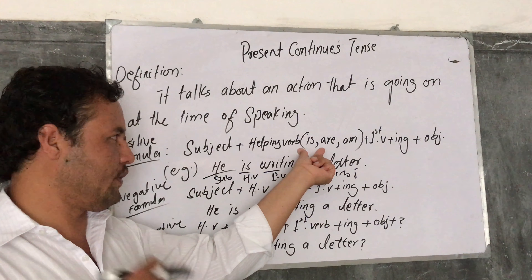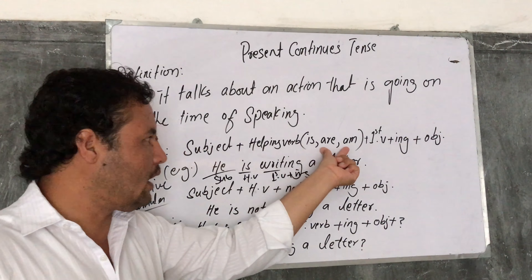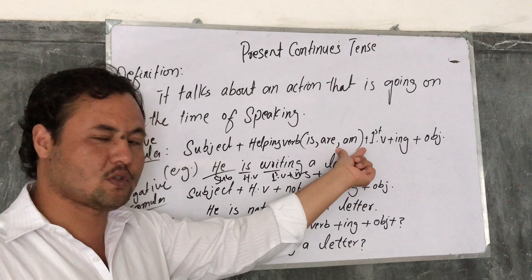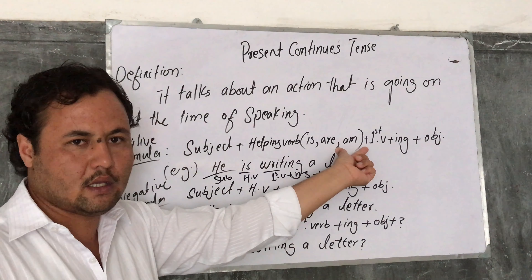One thing else — I should tell over here. Is is used with the singular subject. Are is used with the plural subjects. And am is used with the pronoun I. With I we can only use am, not are or is. The formula for the negative sentence is: subject plus helping verb plus not plus first form plus ING plus object. For example, he is not writing a letter, or they are not writing a letter, or I am not writing a letter.